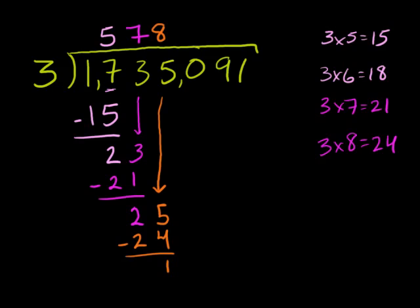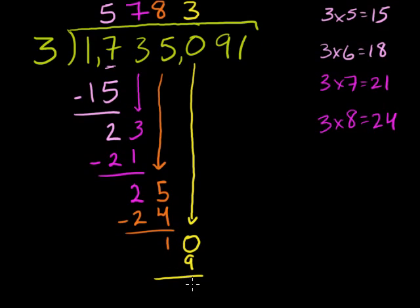Now we can bring down this 0. You bring down this 0 just like that. And you get 3 goes into 10 how many times? Well, that's easy. It goes into it 3 times. 3 times 3 is 9. That's about as close to 10 as we can get. 3 times 3 is 9. 10 minus 9. I'm going to have to scroll up and down here a little bit. 10 minus 9 is 1.